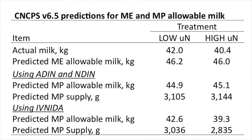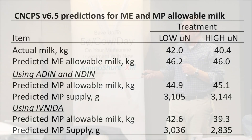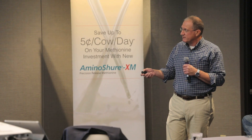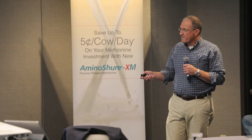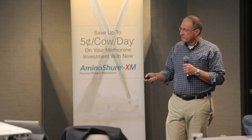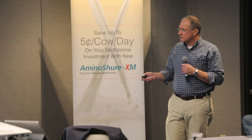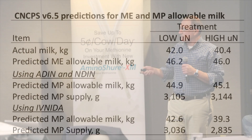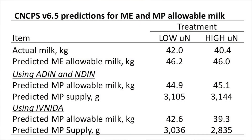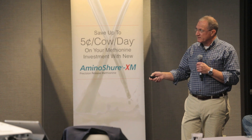So we do the evaluation of ADIN and NDIN. Here's the predicted MP-allowable milk: 45 and 45, pretty close to the ME. And here's the predicted MP supply. If you use Debbie's assay, predicted MP-allowable milk is 42.6 and 39.3, and the cows make 42 and 40. So we're a kilo there and 0.6 kilos there. All of a sudden the model nails it. But again — missing information. It says that for some of these ingredients, we're going to have to move away from ADIN and NDIN as our proxies.